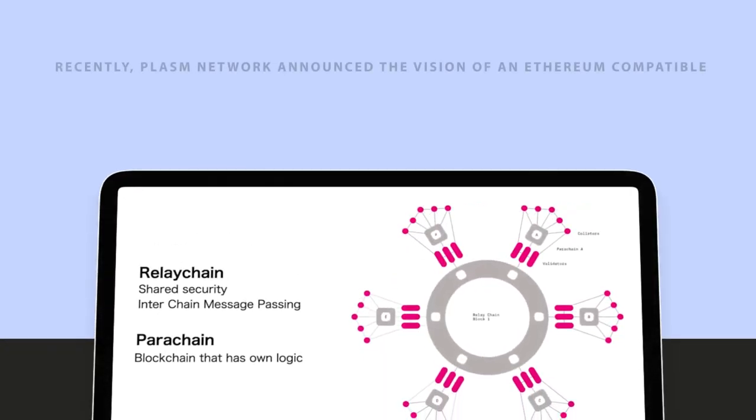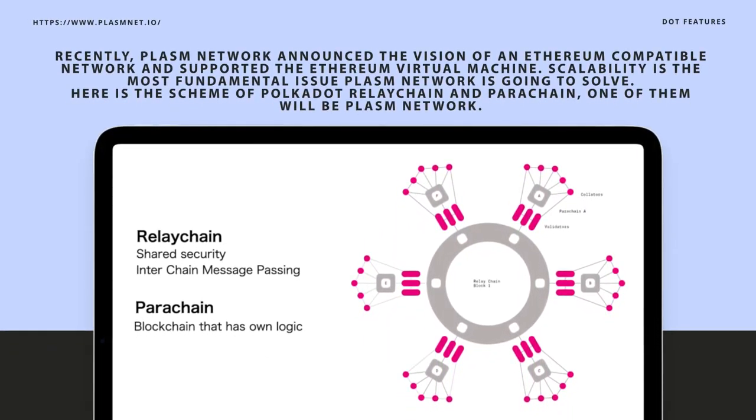When we say layer 2, we don't mean only speed and TPS. It also means cheaper transaction costs and faster finality. Users will choose Plasm simply because it's the only parachain that supports layer 2 — faster and cheaper from day one. Recently, Plasm Network announced the vision of an Ethereum-compatible network and support for the Ethereum Virtual Machine.